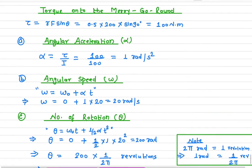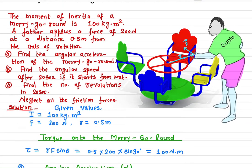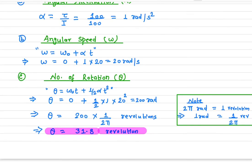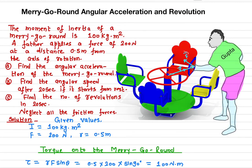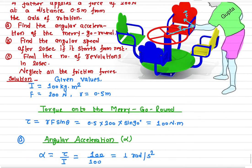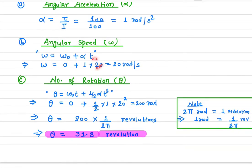The merry-go-round was initially at rest, so omega-naught equals zero. Alpha is 1 rad/s² as just calculated, and the time is 20 seconds. We need to find the angular speed after 20 seconds, so substituting t = 20 seconds gives us an angular speed of 20 radians per second.